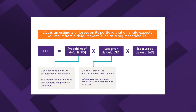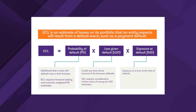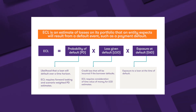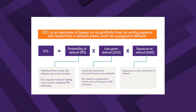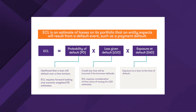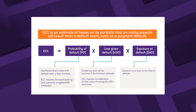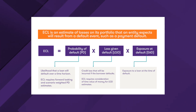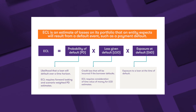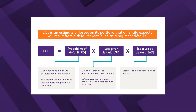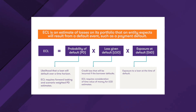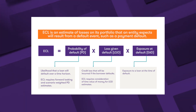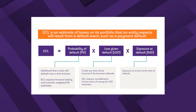ECL is typically broken down into Probability of Default (PD), Loss Given Default (LGD), and Exposure at Default (EAD) — the product of these three is your ECL. PD is the percentage chance that a loan would default. LGD is the percentage amount that would be lost on a loan that does default. EAD is the expected outstanding amount on the future date of default, and therefore considers things like drawdown of future amounts and prepayments up to the expected date of default.